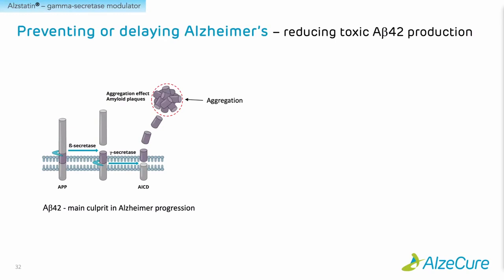Looking at this as a picture, you can see the cleavage of APP — first by beta secretase and then gamma secretase — releasing the toxic A-beta 42, which is the building block of amyloid plaques. Initially, the industry tried to completely block the gamma secretase enzyme. However, gamma secretase also cleaves other proteins which are important for normal cell function, so this approach was not feasible in the clinic.